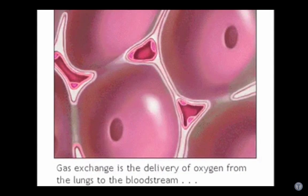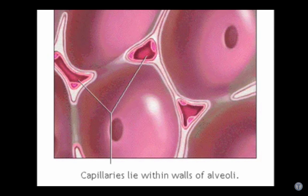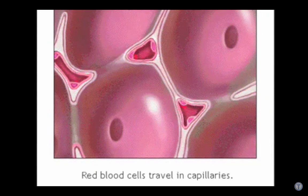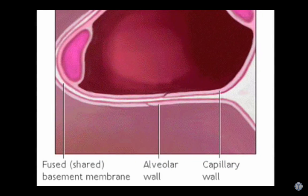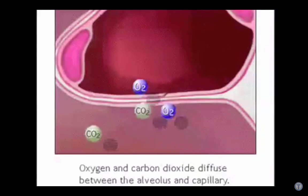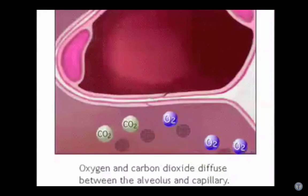Gas exchange is the delivery of oxygen from the lungs to the bloodstream and the elimination of carbon dioxide from the bloodstream to the lungs. It occurs in the lungs between the alveoli and a network of tiny blood vessels called capillaries, which are located in the walls of the alveoli. Here, you see red blood cells traveling through the capillaries. The walls of the alveoli actually share a membrane with the capillaries — that's how close they are. This makes it possible for oxygen and carbon dioxide to diffuse or move freely between the respiratory system and the bloodstream.